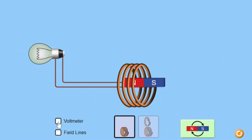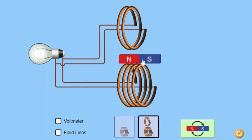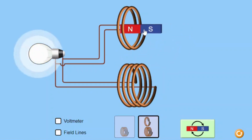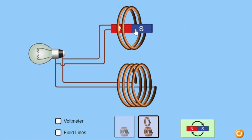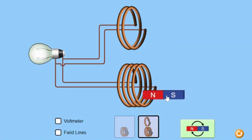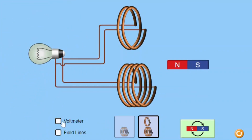The speed of the magnet affects the rate of change of magnetic flux. A faster-moving magnet increases the rate of change of magnetic flux, resulting in a higher induced EMF and a brighter bulb. Conversely, a slower-moving magnet decreases the rate of change of magnetic flux, resulting in a lower induced EMF and a dimmer bulb.